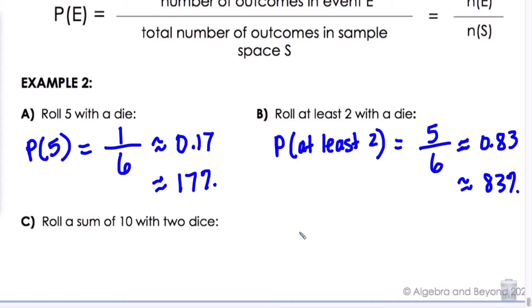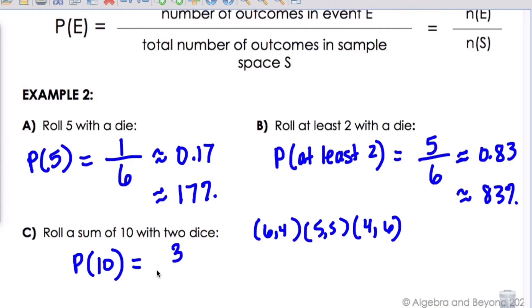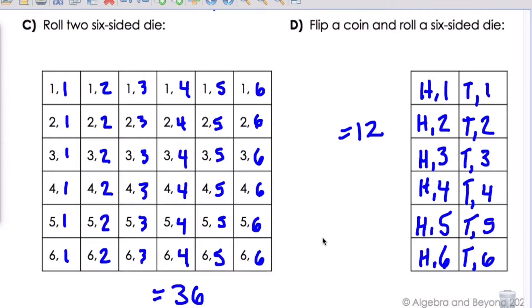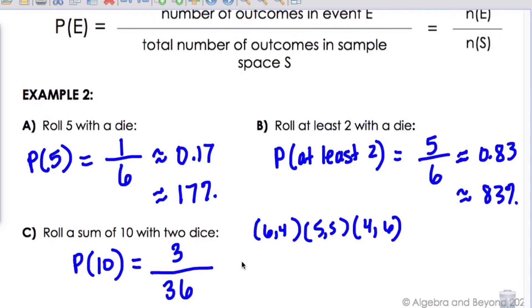Letter C, roll a sum of 10 with two dice. So P of 10. We know that if we want a sum of 10, let's think about our choices. We have six and four, then five and five, and then four and six. We know that our numerator would be three for the three possibilities, divided by our sample space. If you remember from our first page, when we're rolling two six-sided die, we have 36. So three out of 36, which is 1/12, which will give me my decimal and my percent. Usually when we talk about things like even with the weather, what's the percent chance of rain, a lot of times we like it in percentage because it helps us relate it to how we think.